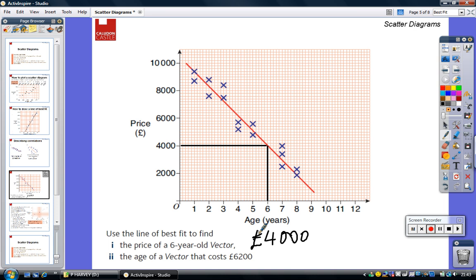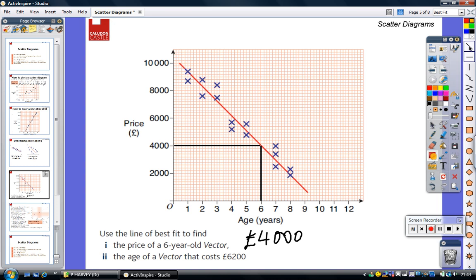The second question is to work out the age of a vector that costs £6,200. So this time I'm going to go across at £6,200. Now I know that each square is going to be worth £200. So I'm going to go across one square up until I hit my line of best fit.